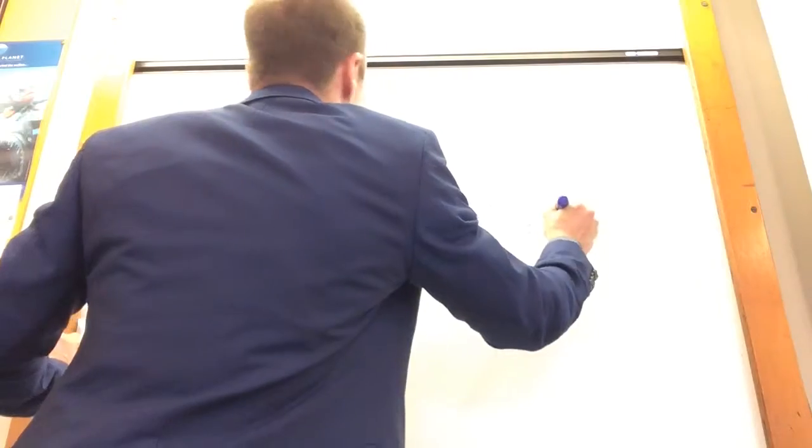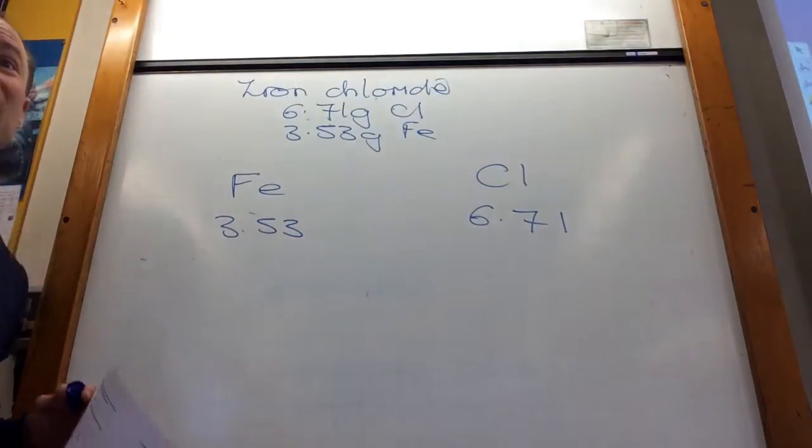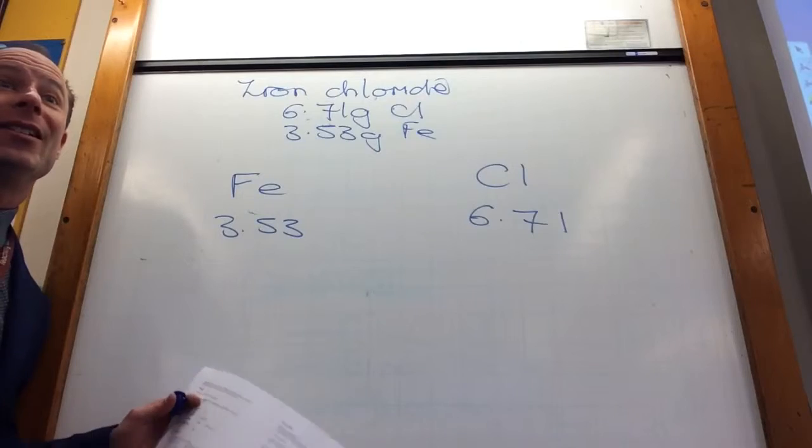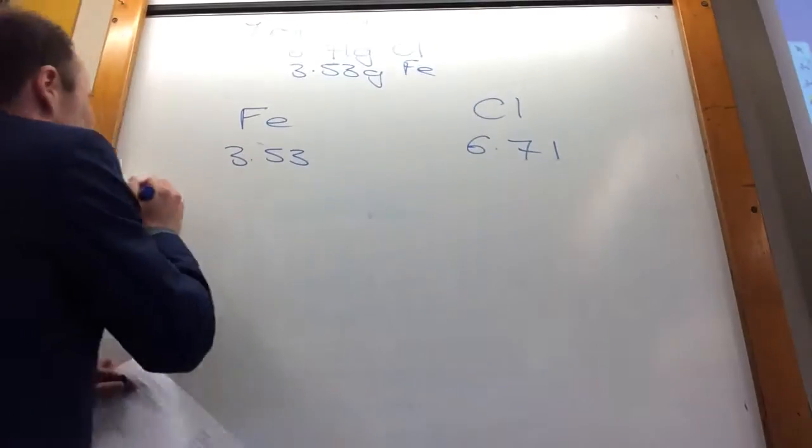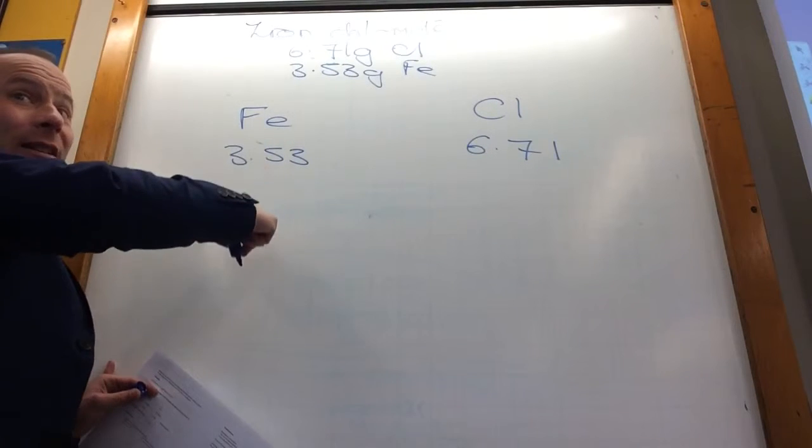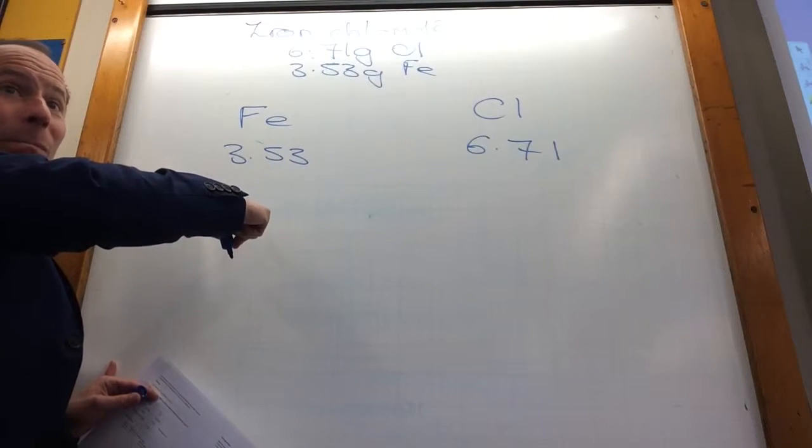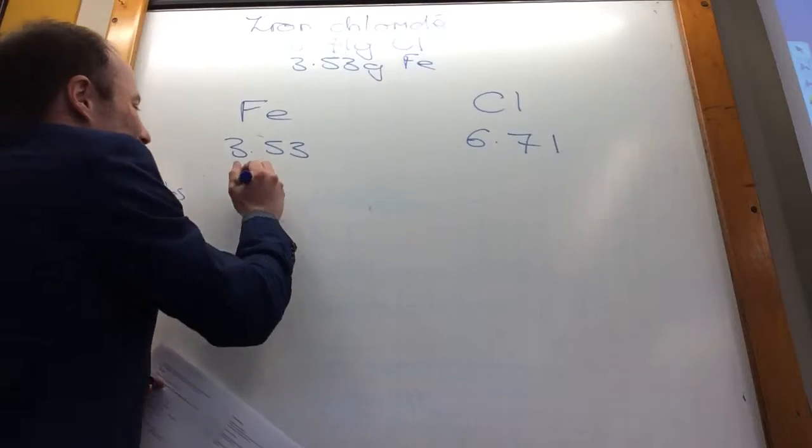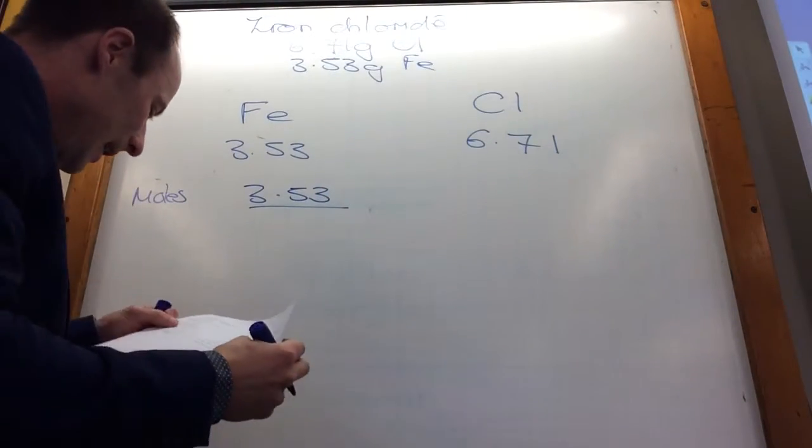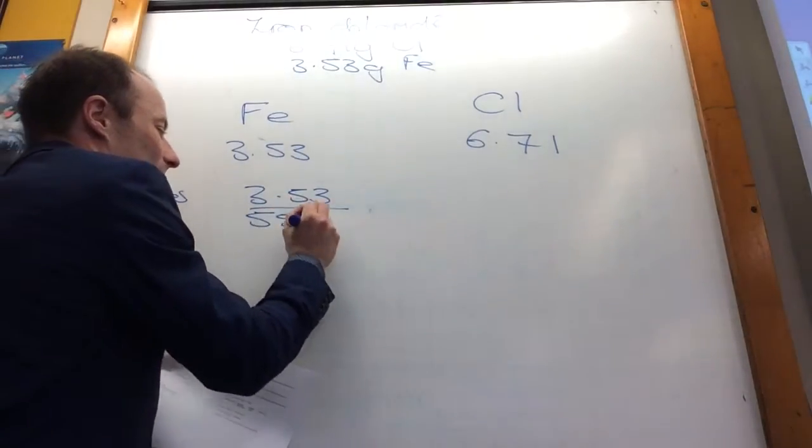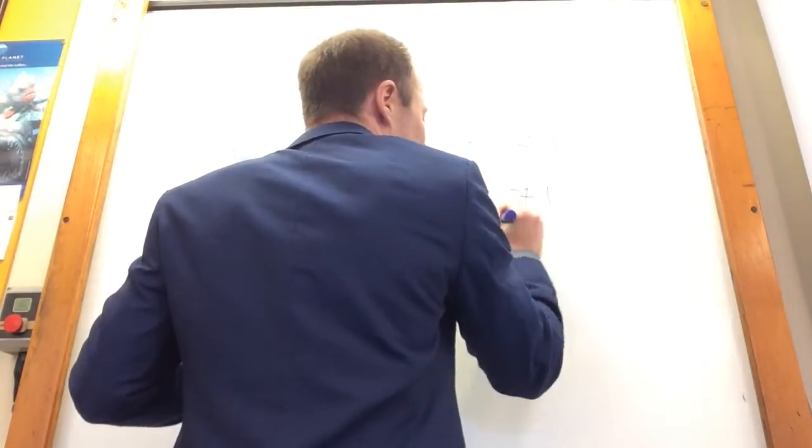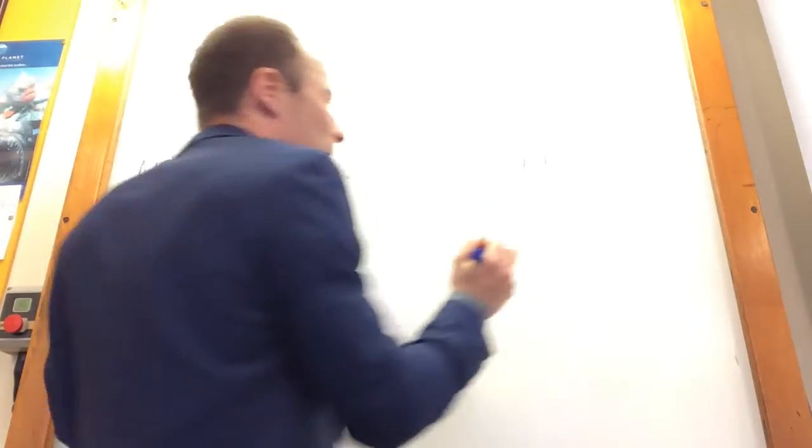Separate your two elements out and just write the mass of each underneath. Can I compare mass like that? No. Whenever they give you a mass, you always convert it into moles. So how do I convert these into moles? Moles is mass divided by molar mass. The molar mass of iron, if you look at your periodic tables, is 55.8. The molar mass of chlorine is 35.5.